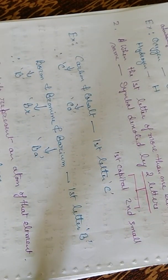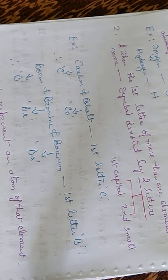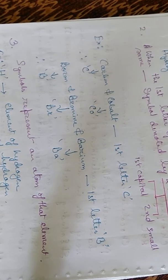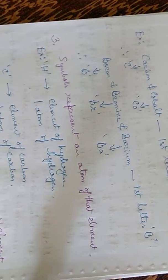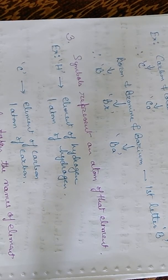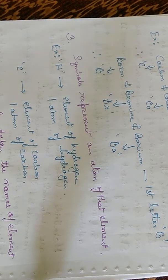The symbol also represents one atom of that element. For example, H represents one atom of hydrogen and C represents one atom of carbon. Some symbols are taken from the element's name in Latin, German or Greek. For example, iron is Fe from the Latin word 'ferrum', sodium is Na from 'natrium', potassium is K from 'kalium' in Latin, and copper is Cu from 'cuprum' in Latin.